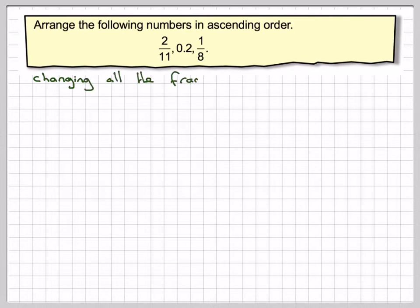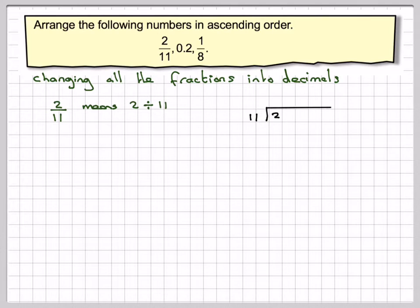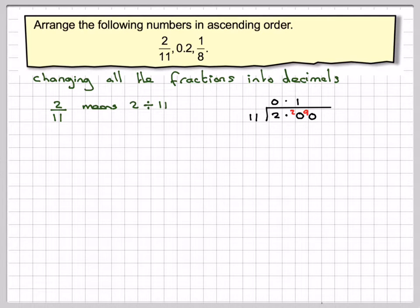Changing the fractions into decimals: 2 elevenths means 2 divided by 11. 11 goes into 2 — it doesn't go, so put in the decimal point; we've got 2 remaining. 11 into 20 goes 1 time, remainder 9. 11 into 90 goes 8 times, remainder 2.